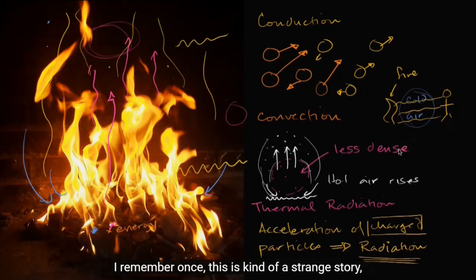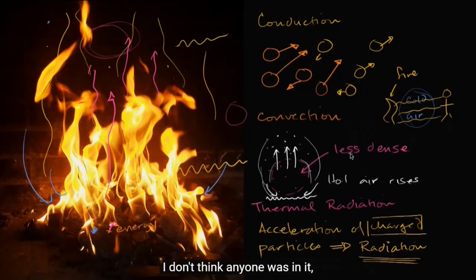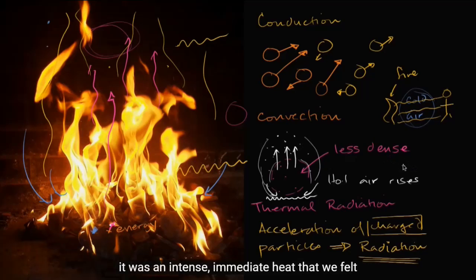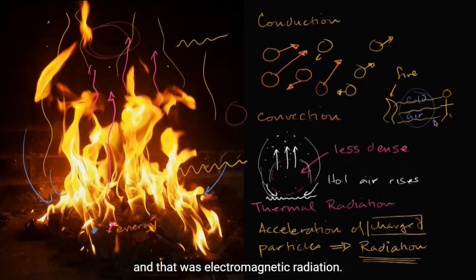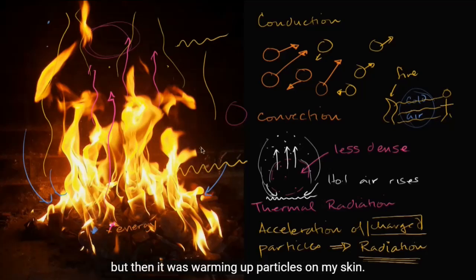I remember once I was on the highway and there was a car on fire. We drove to the far lane because it was on fire — three lanes away — and it kind of exploded. Hopefully no one was in it. Right when it exploded, there was an intense, immediate heat that we felt through the window of the car. That was electromagnetic radiation — thermal radiation being released by the accelerated particles in the air around that explosion, which we perceived as fire, warming up particles on my skin.